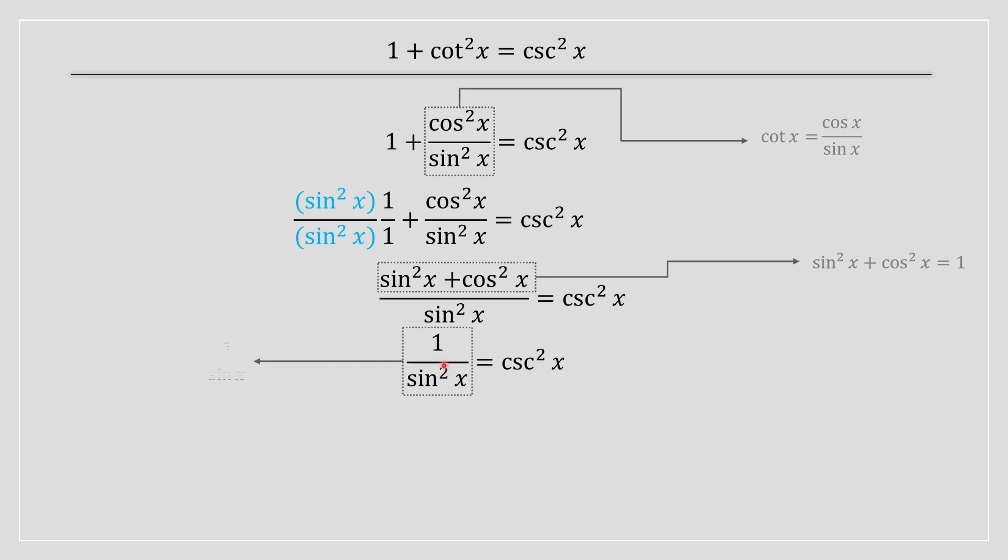The last step is basically we know that one divided by sine of x can be rewritten as cosecant of x. So if we replace that, and since we got a square over here, we're going to basically obtain cosecant squared of x, which implies that the left hand side is equal to the right hand side.